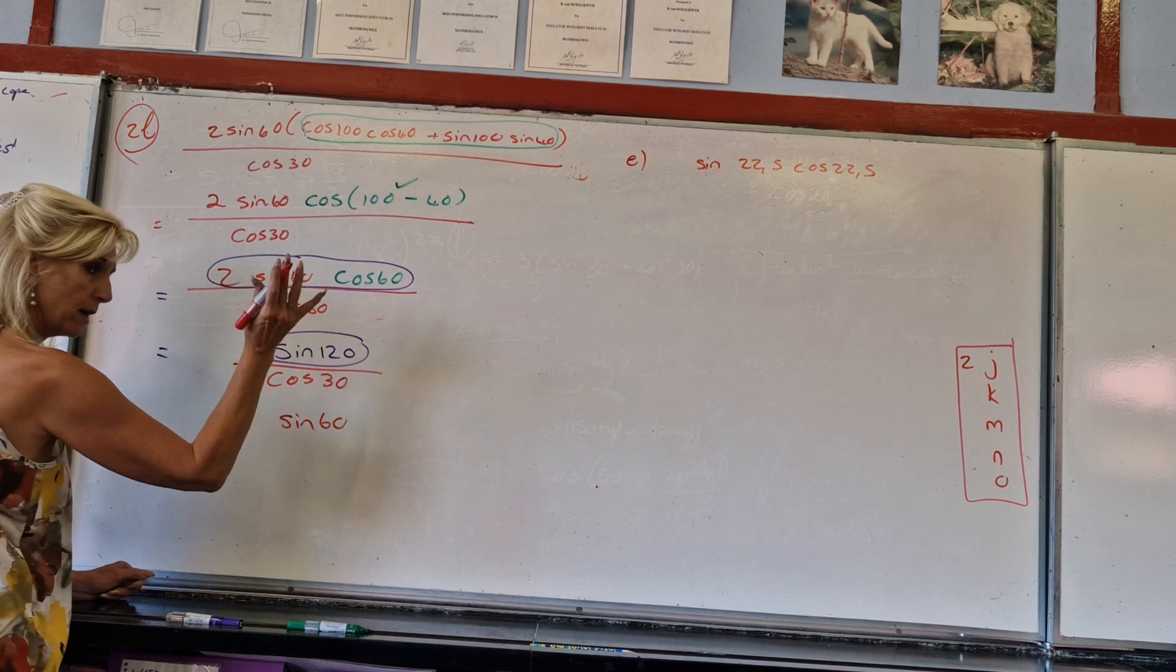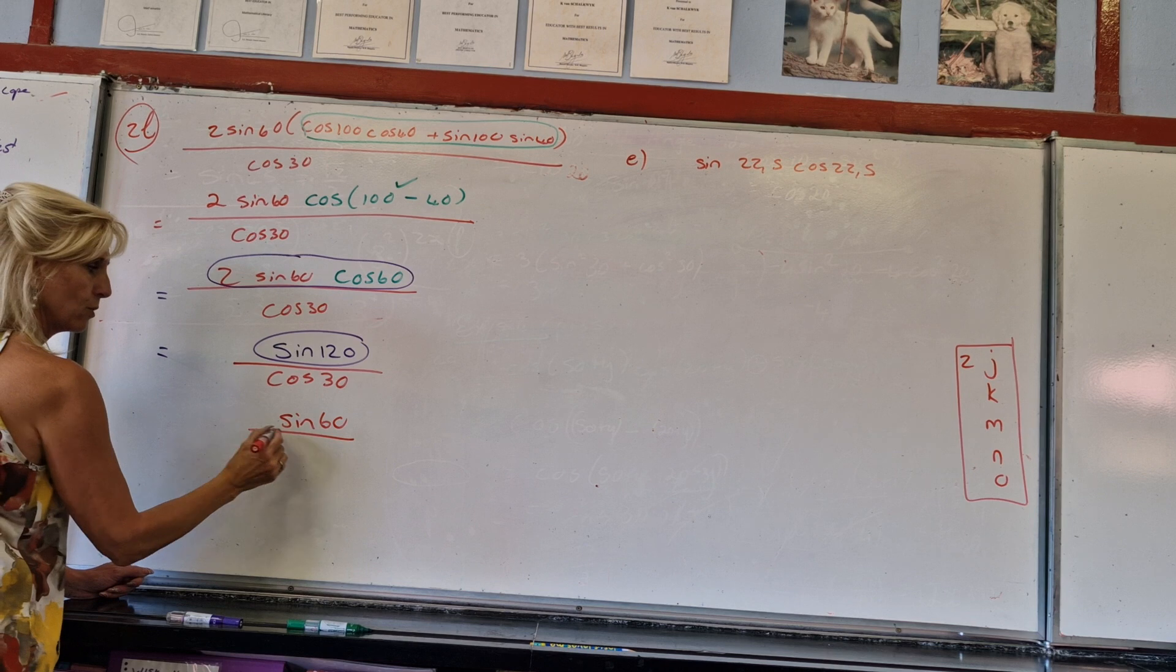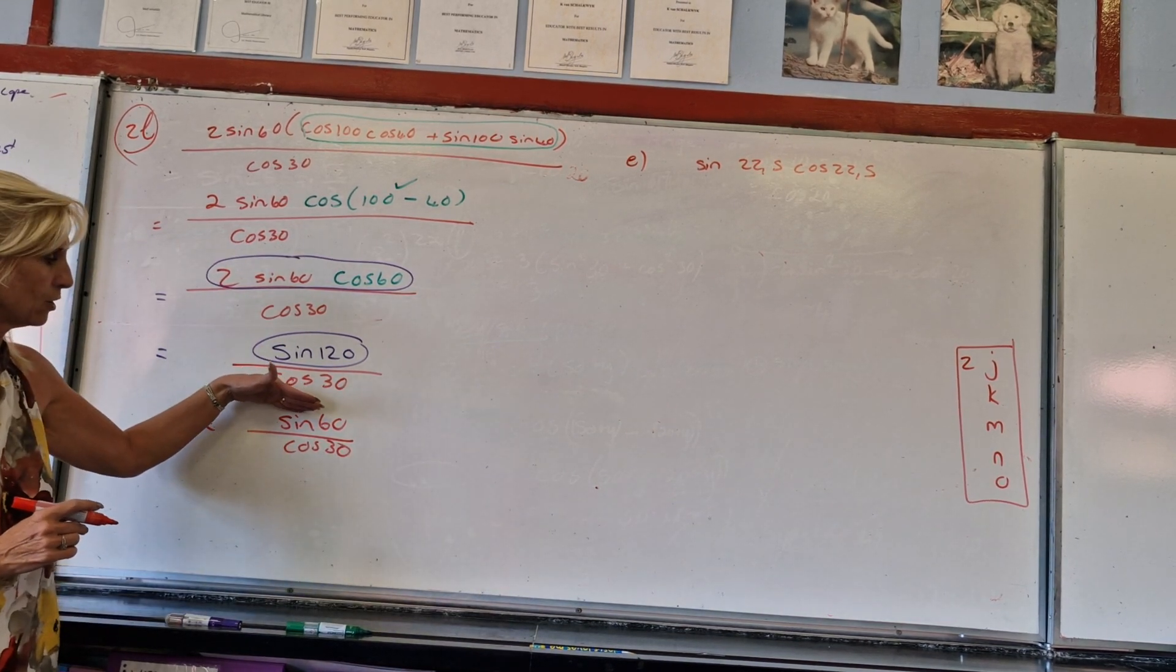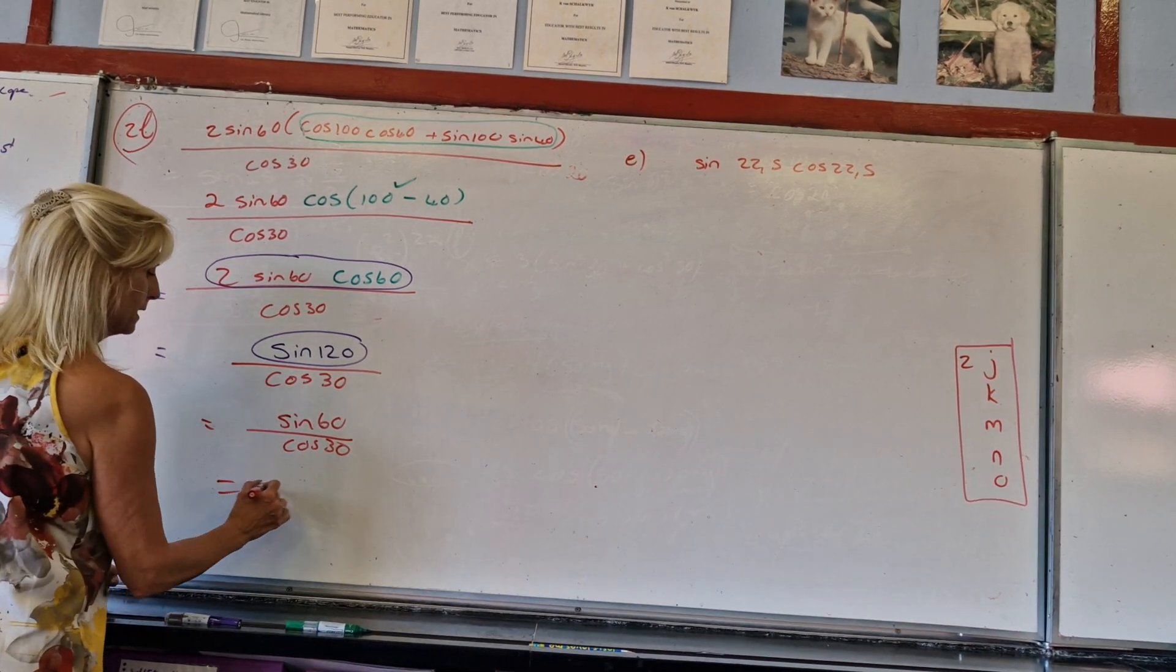So you've got to reduce it to an acute angle, which will then be sin 60, 180 - 60, right? Which is sin 60 positive, because it's second quadrant, over cos 30. And still I could have seen, let's make that then cos 30 and cos 30. Or I could have seen, I can't remember any of that.